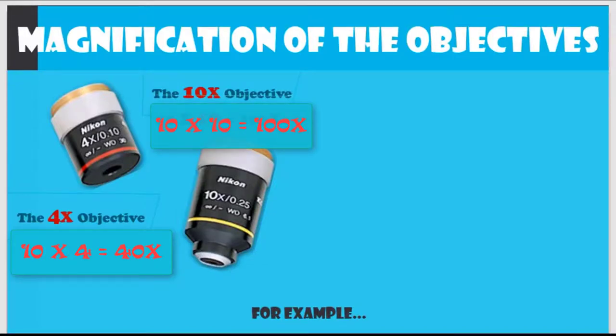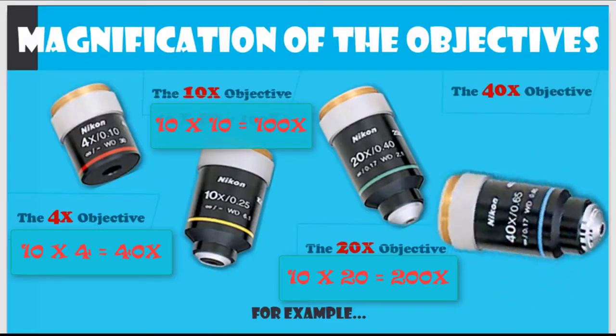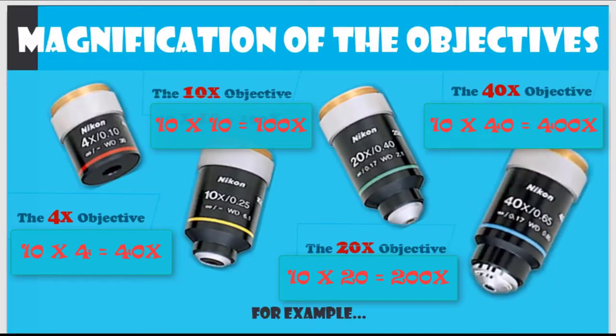Using the 10x objective, your specimen appears 100 times larger than with the naked eye. A specimen appears 200 times larger if you are using the 20x objective.